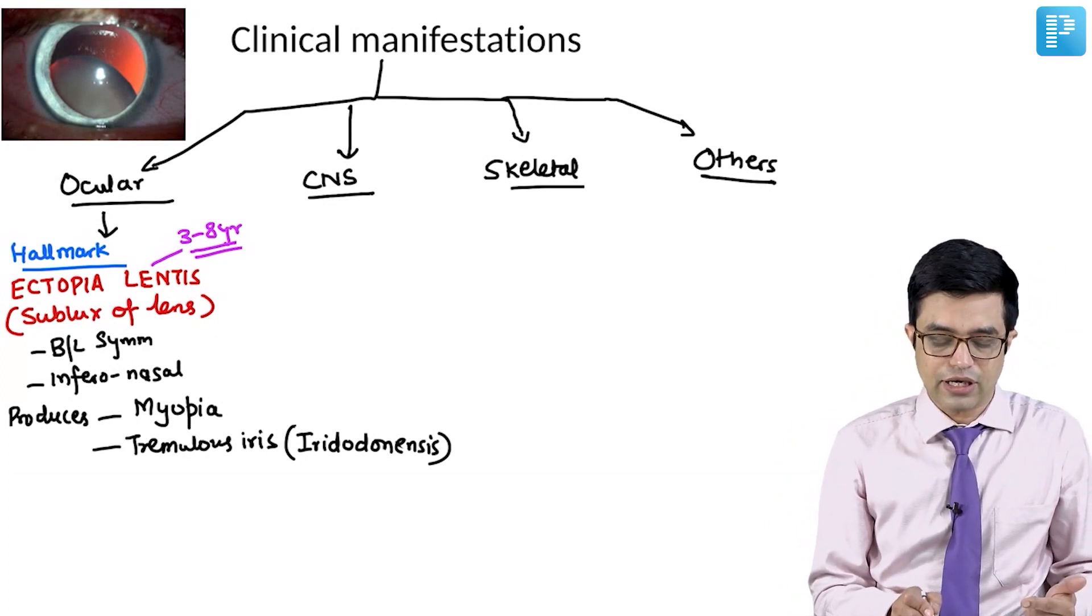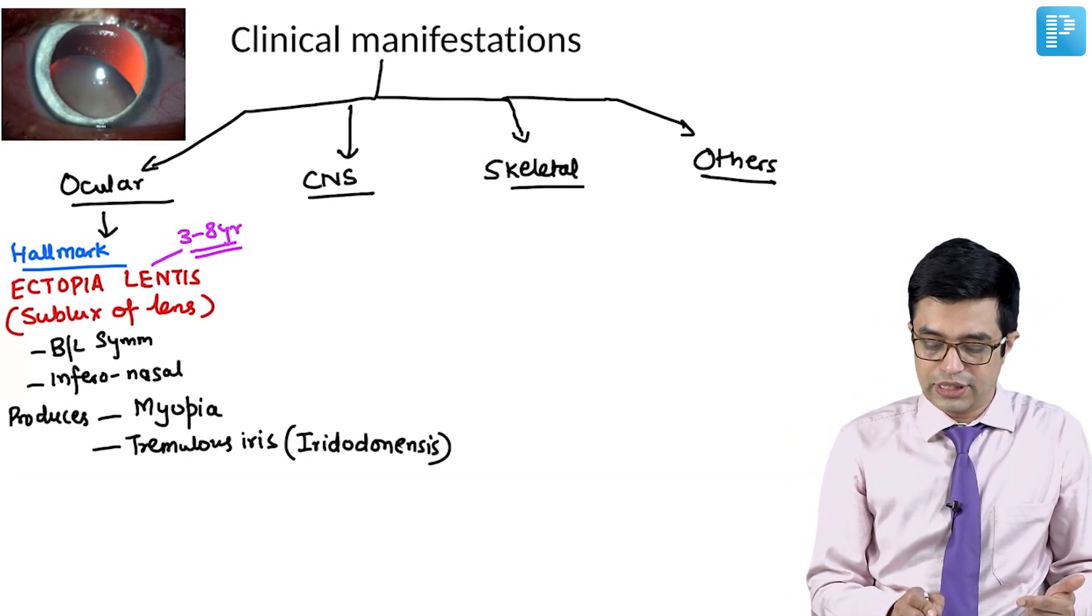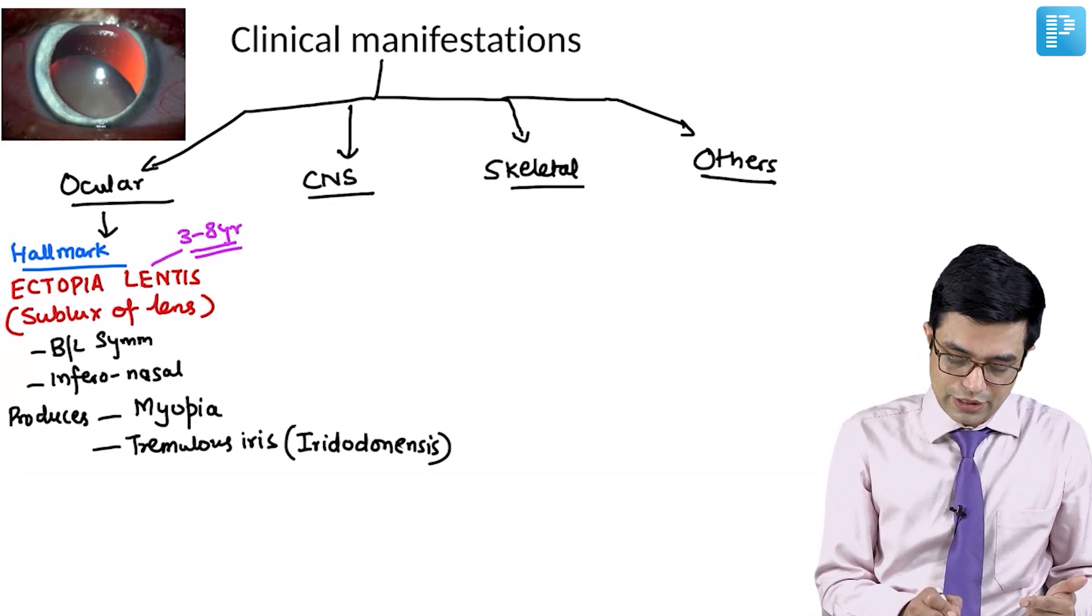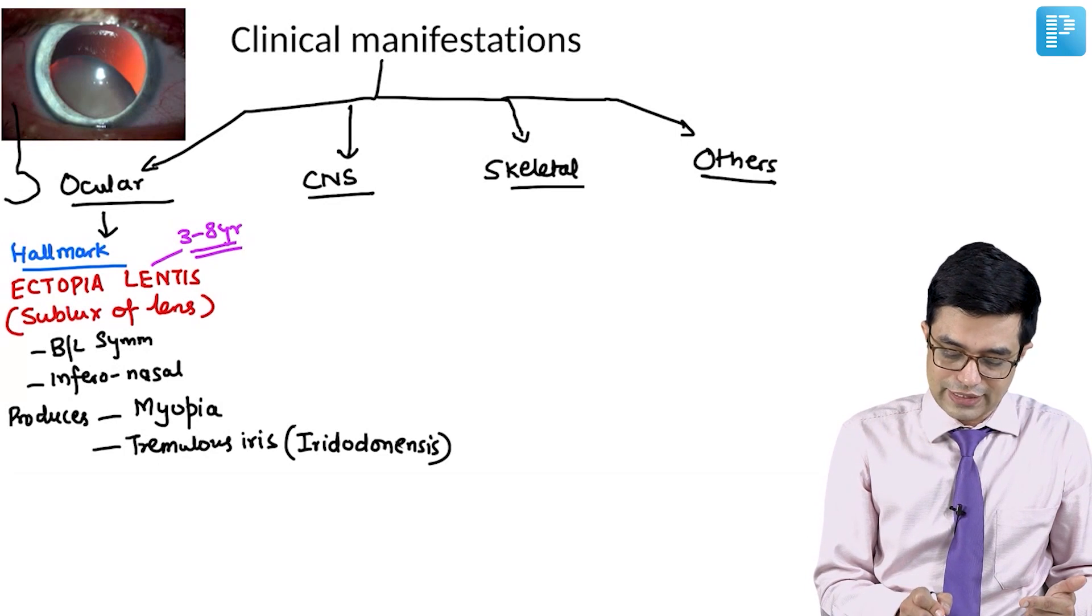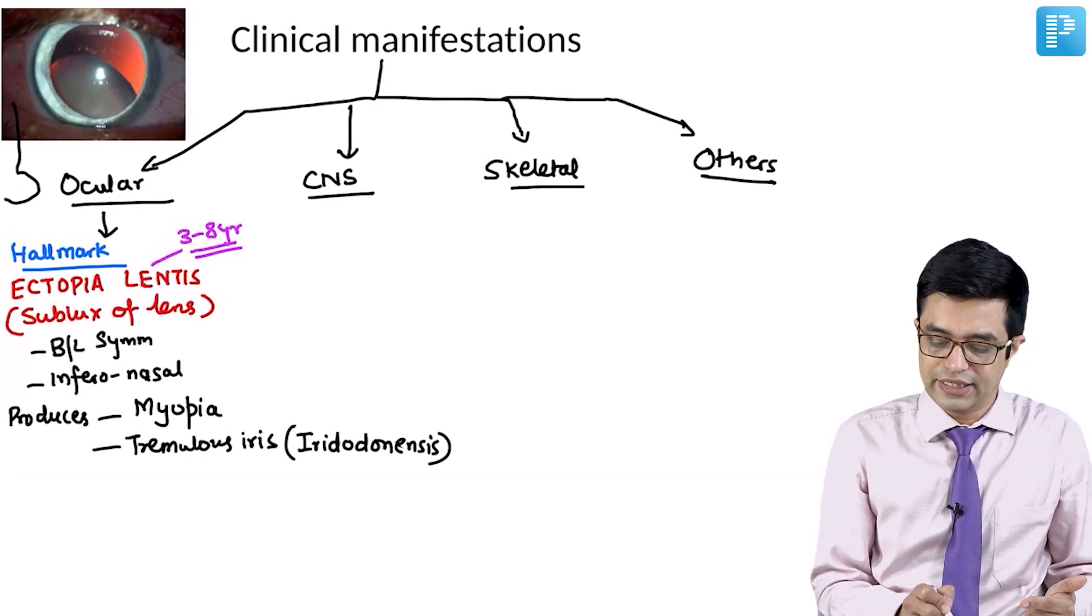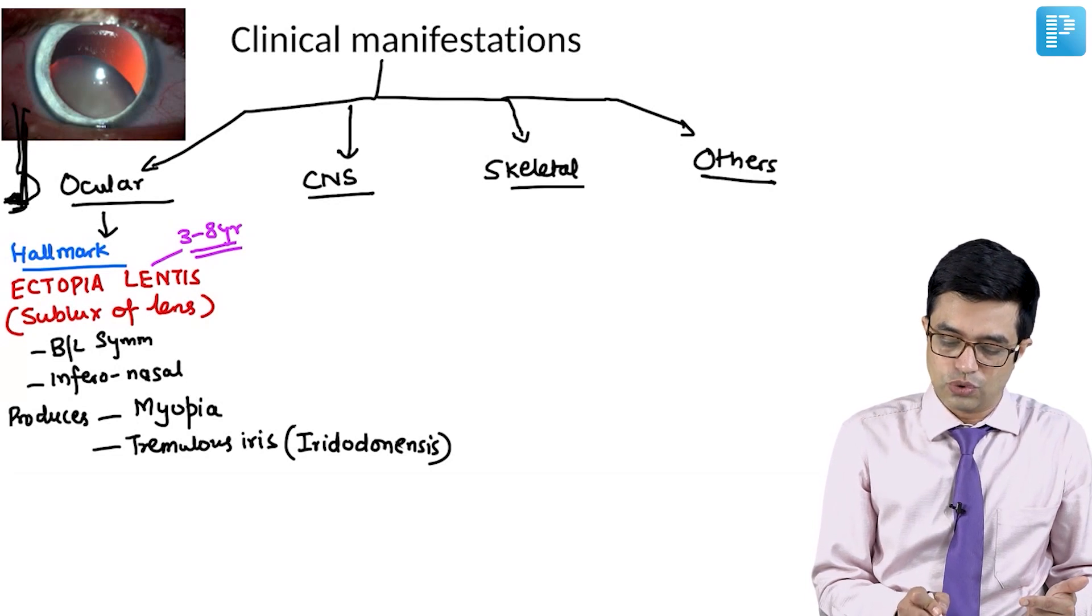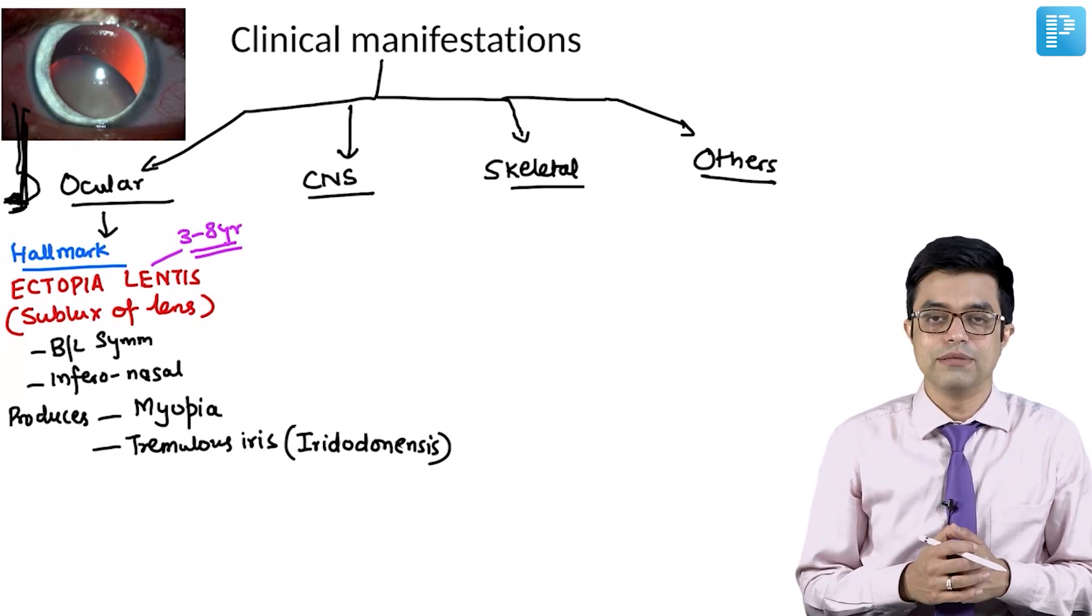This is the left eye which has been shown, so it is happening inferior and towards the nasal side. This is the nose which is present here. This is how ectopia lentis typically looks like.